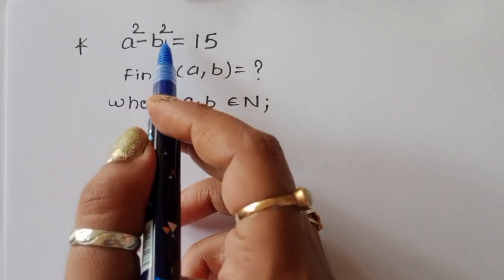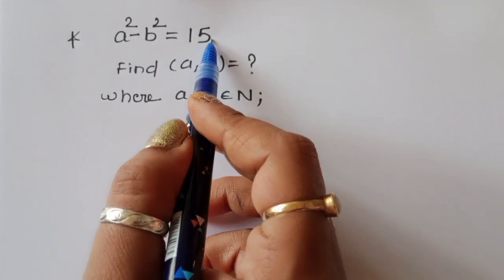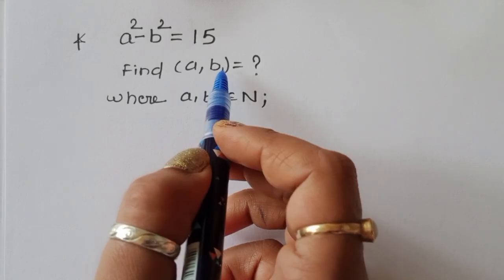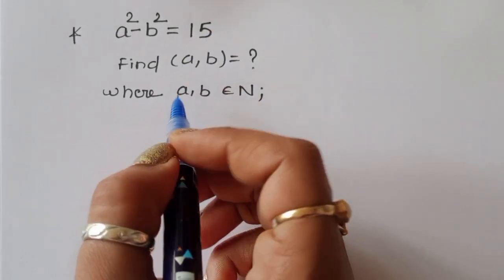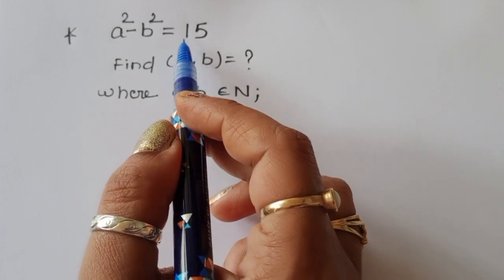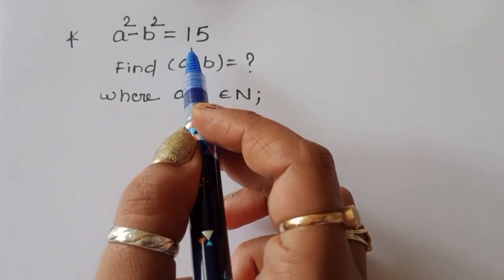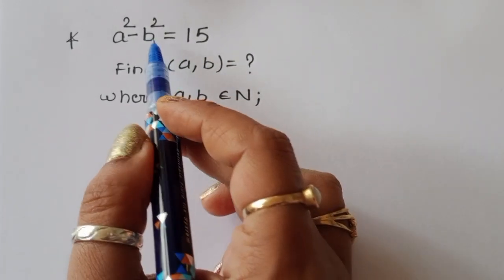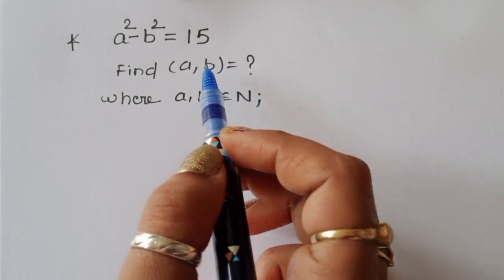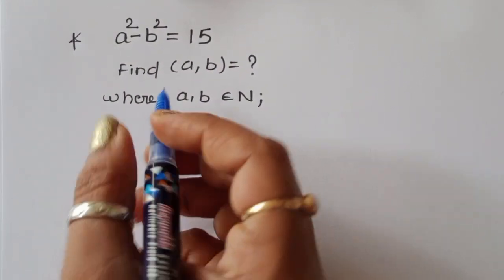A squared minus B squared is equal to 15. We have to find out the value of A and B, where the condition is A and B belong to the natural numbers. One more condition is A minus B is less than A plus B. Let's start the solution.